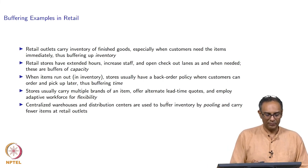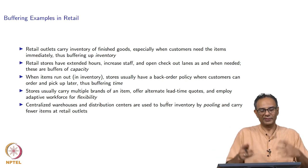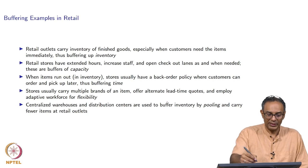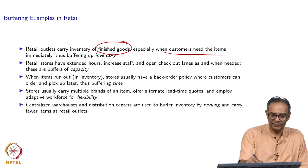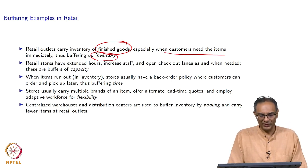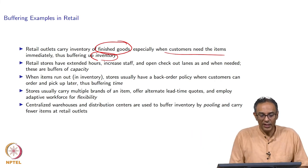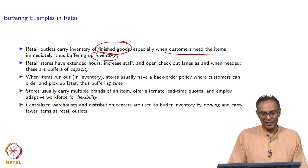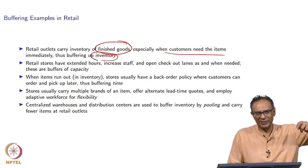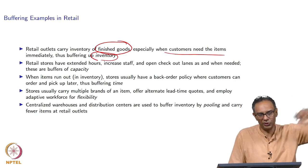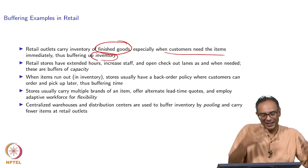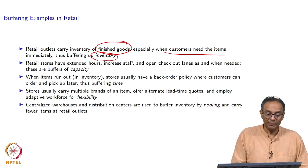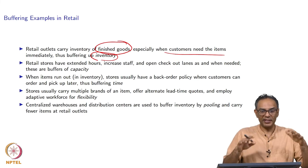The final example is retail — for instance, a clothing store. Typically, retailers carry inventory of finished goods so that whenever a customer needs an item, they have it available. You go to a store and usually find the shirt or pants you want because they maintain inventory of those items. Retailers carry enough inventory to manage uncertainty — some items are kept in the back since there is not enough display space — and this is how they manage variability.